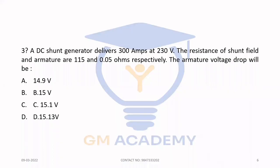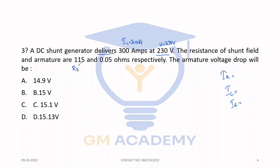Next question. A DC shunt generator delivers 300 ampere at 230 volt. The resistance of the shunt field and armature are 115 ohm and 0.05 ohm respectively. The armature voltage drop will be? Given: load current IL = 300A, terminal voltage V = 230V, shunt field resistance RSH = 115 ohm, armature resistance Ra = 0.05 ohm.